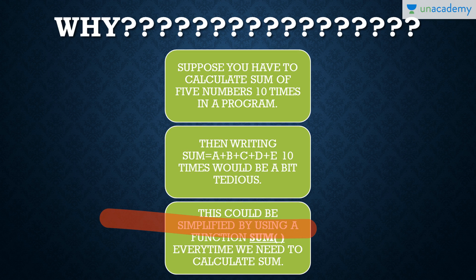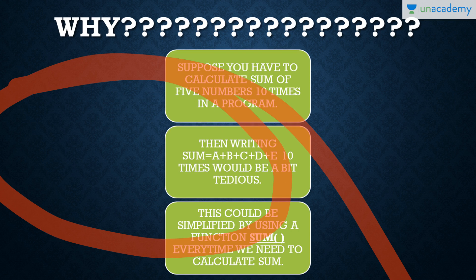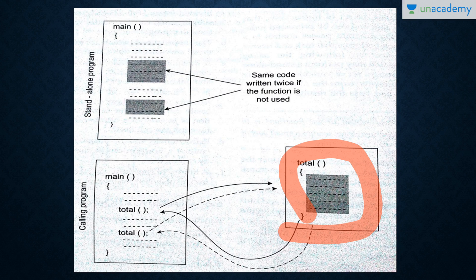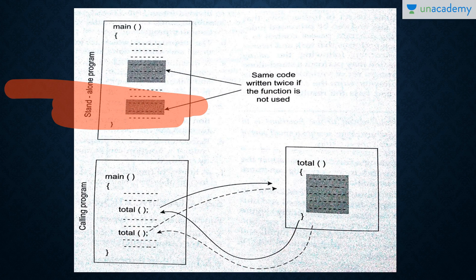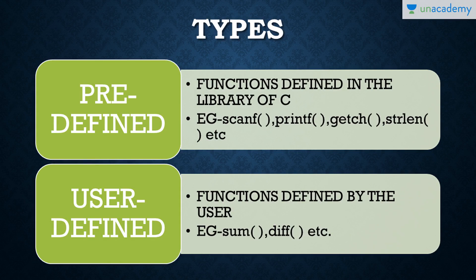But this set of code could be simplified by using a function called SUM. Every time we need to calculate the sum of five numbers, we can just call the function SUM and send the values there and get our task performed. In a standalone program, the same code is written twice. But if we make a total function once, we can call it multiple times. This makes our code simple and concise.